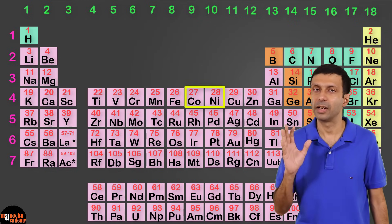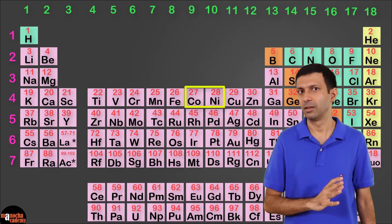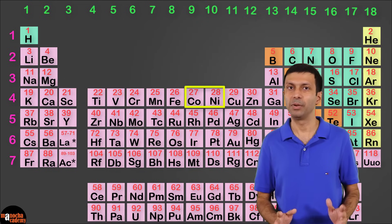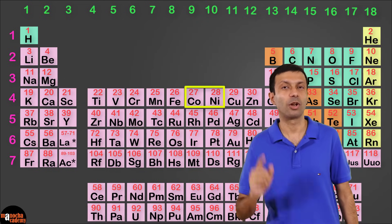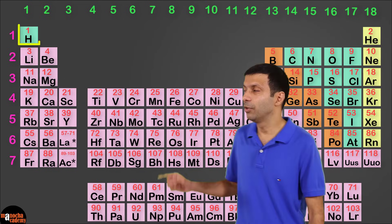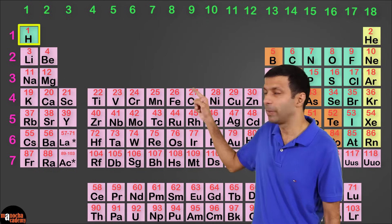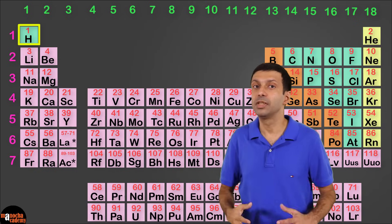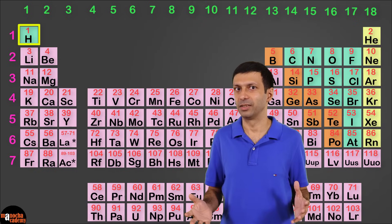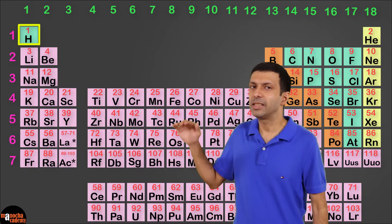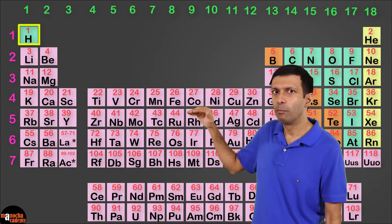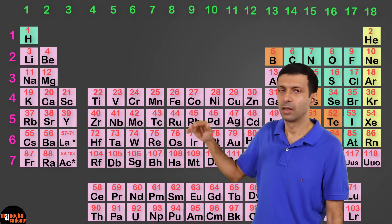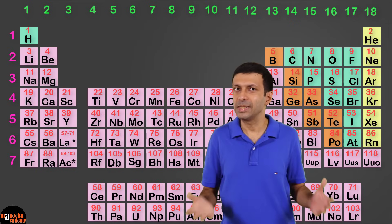Even though cobalt has a higher atomic mass, the modern periodic table is based on atomic number, so cobalt comes before nickel. Even though hydrogen is placed in group 1, it's given special treatment - many times it's shown broken off from group 1.